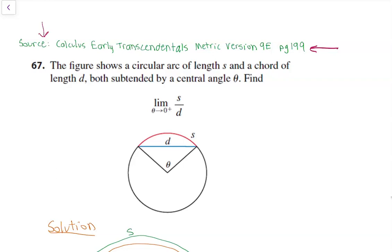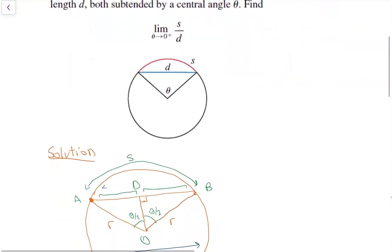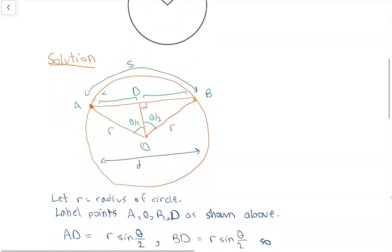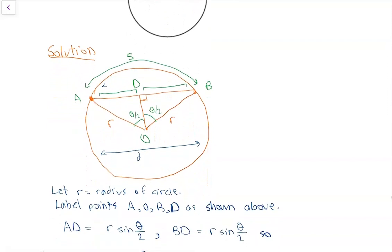Let's have a look at the solution. I've redrawn the diagram and I've made the radius of the circle equal to r and I've also labelled four points A, B, O and D.